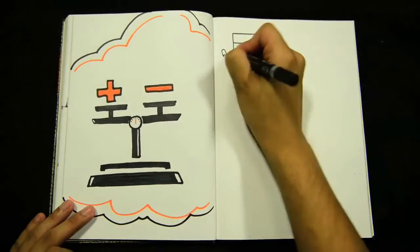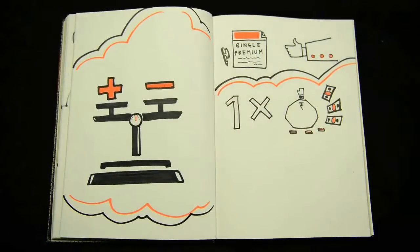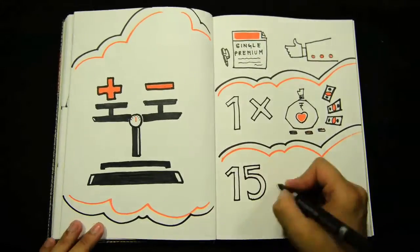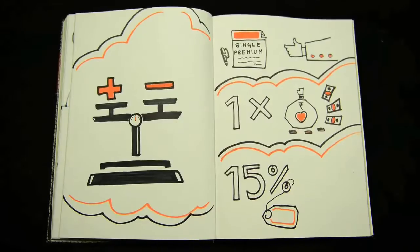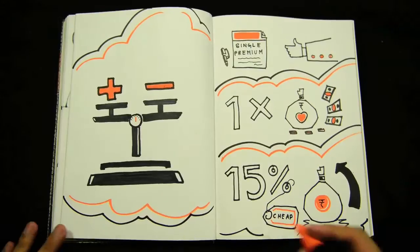The benefits of a single premium policy are that you make a one-time lump sum payment for a policy that lasts your entire life. A single premium policy ends up being at least 15% cheaper than a regular premium one, since the insurer recovers the expense up front.